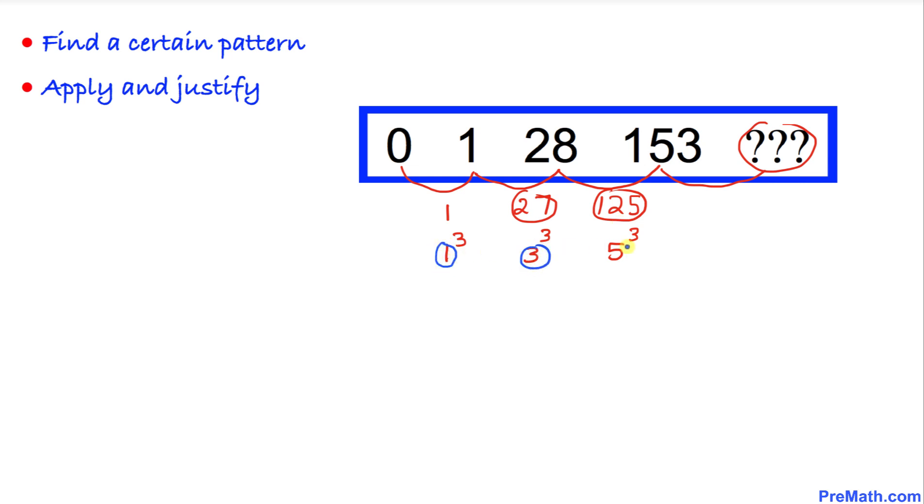Now let's look at these numbers: 1, 3, 5. They are obviously odd numbers.